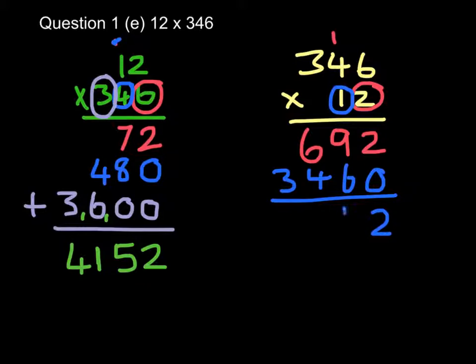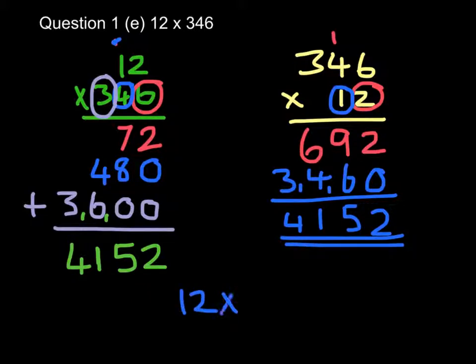Add those together. I get 2, 15, 11, and 4. So either way, I will get 12 times 346 equal to 4,152.